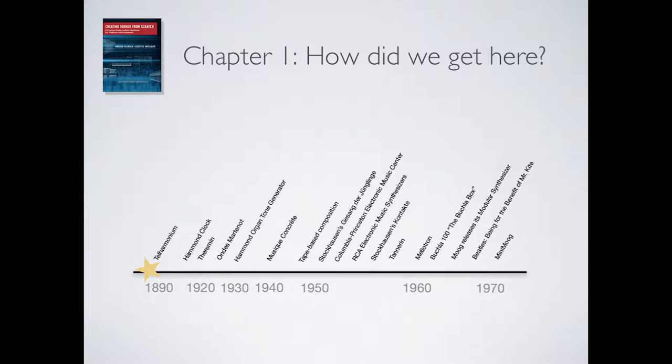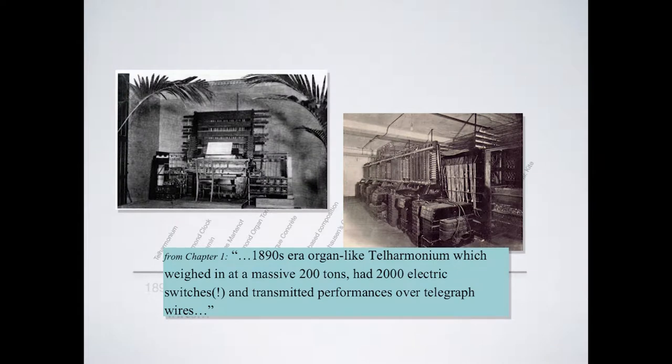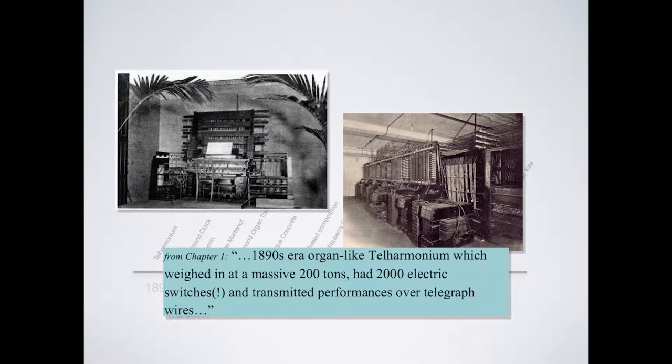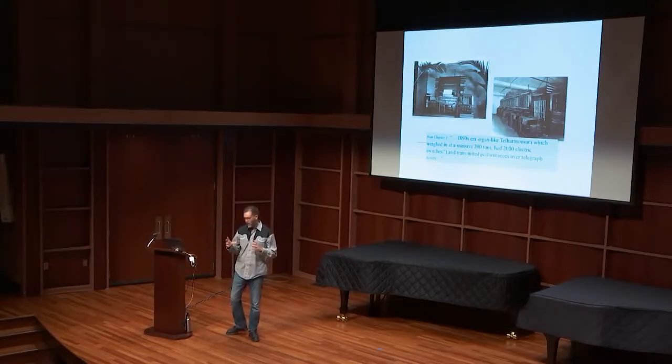So just a little bit of history and where some of these things fall in. When I was researching for the book, I was trying to figure out what I would call the very first electronic instrument. The one that seemed to fit well was called the telharmonium, which was hugely impractical — weighs 200 tons, has 2,000 electric switches, and transmitted performances over telegraph wires. The instrument was innovative in that it used something that looked like a gear, and we'll see a picture of it with a Hammond organ coming up.